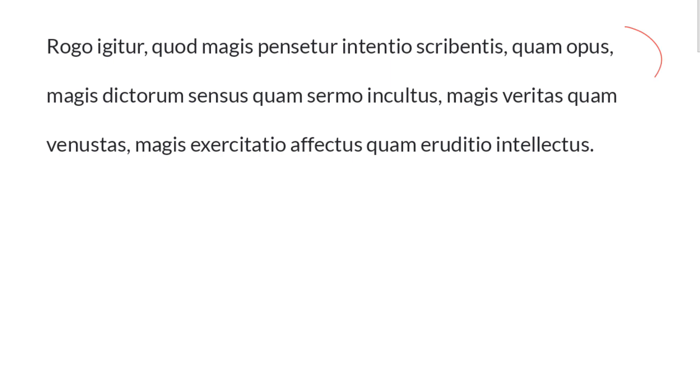This is a fairly straightforward sentence. We begin with rogo igitur. Rogo is, of course, first singular, present indicative active. It's a first conjugation verb, prima declinationis, rogare.